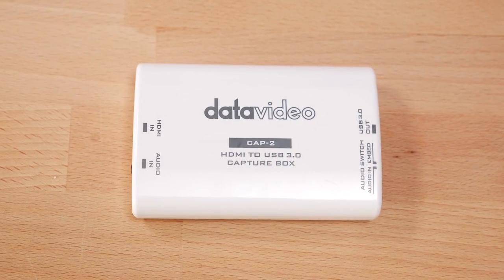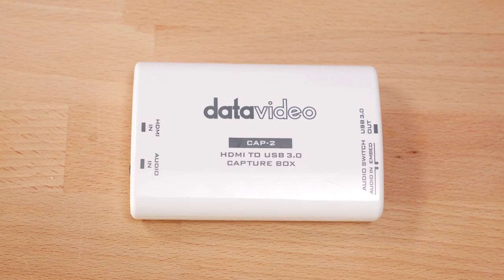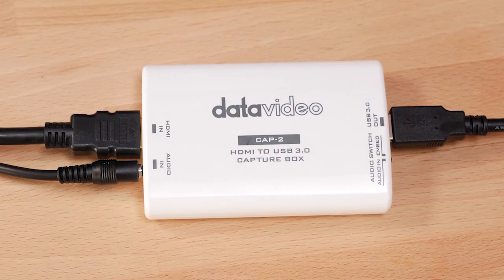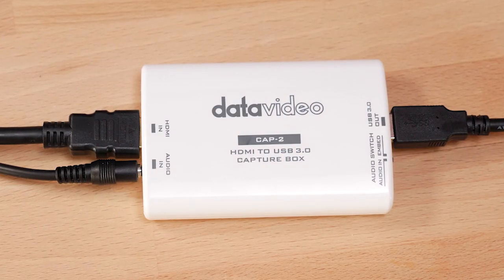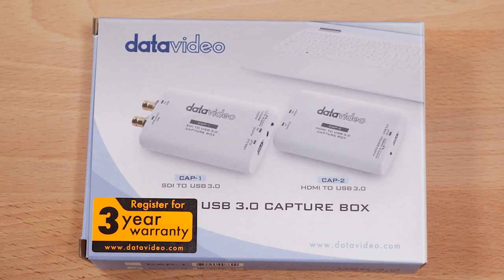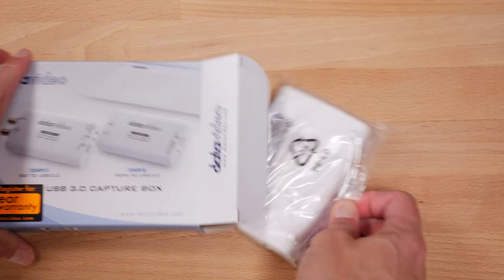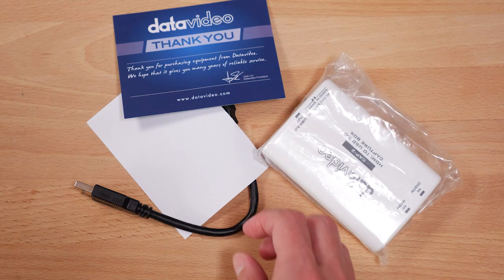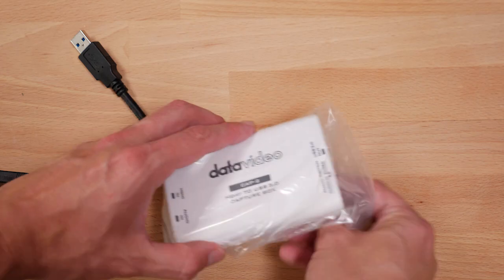The DataVideo Cap 2 is an HDMI to USB 3.0 capture box which works just like an HDMI video capture card with an external audio input. To see an unboxing video and learn about the applications where you can use a Cap 2 and how to connect it to your Mac or PC, click the link in the description below and then come right back here.